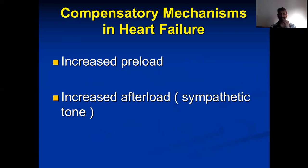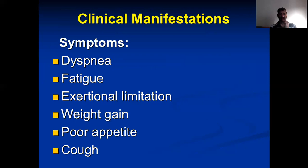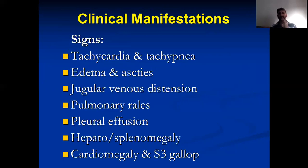This pathophysiological mechanism — adrenals, baroreceptors, increased sympathetic activity, and the renin-angiotensin system — leads to increased volume and increased preload to the heart, increased afterload, increased sympathetic tone, and increased force of contraction, also leading to exhaustion of the LV myocardium through tachycardia and overactivity. This pathology leads to dyspnea, fatigue, exertional limitation, weight gain, poor appetite, cough, and many more symptoms. The signs you see include tachycardia, tachypnea, edema, ascites, jugular venous distension, pulmonary rales, pleural effusion, hepatosplenomegaly, cardiomegaly, and S3 gallop.